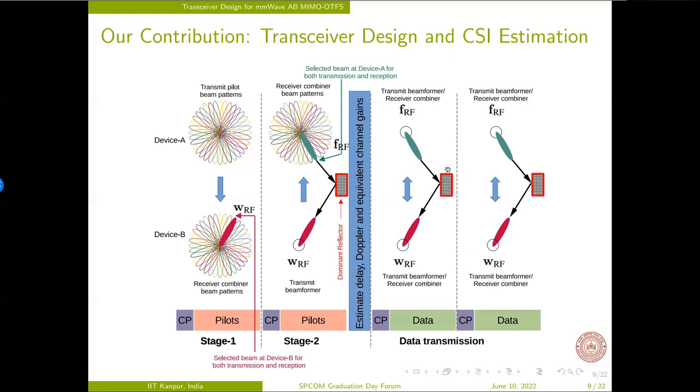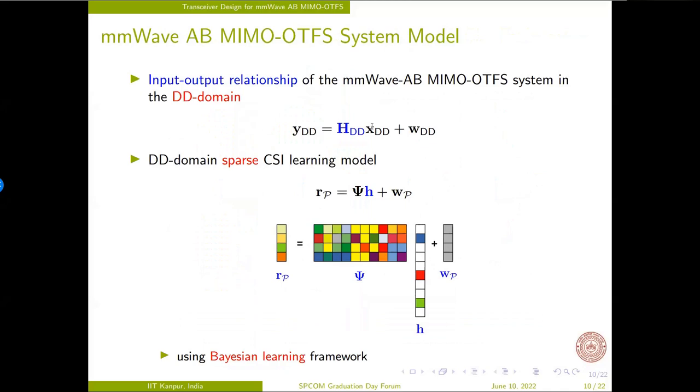Finally, stage 3 uses these selected beams and the DD domain CSI for efficient data transmission and reception. For this, our key contribution is in deriving the delay Doppler domain input-output relationship of the proposed MMWave AB MIMO OTFS system in this form. Furthermore, our CSI learning problem can be formulated as a sparse linear regression problem as this, where the DD domain CSI H, owing to only a few multipath components, is sparse in nature. Then we have also developed a Bayesian learning procedure to learn this DD domain CSI.